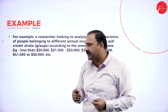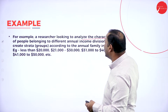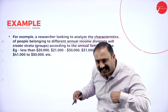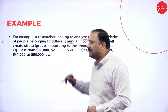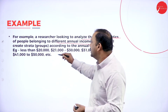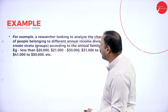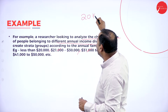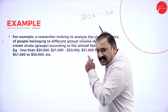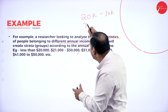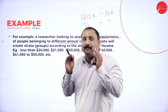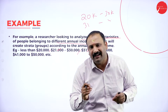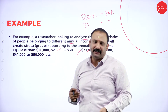For example, a researcher analyzing characteristics of people belonging to different annual income divisions will create strata according to annual family income — say 20,000 to 30,000, then 31,000 to 40,000, then 41,000 to 50,000. There is no overlap: 30,000 is not repeated in the next stratum. This avoids confusion and allows data to be understood and collected in a better, cleaner manner.